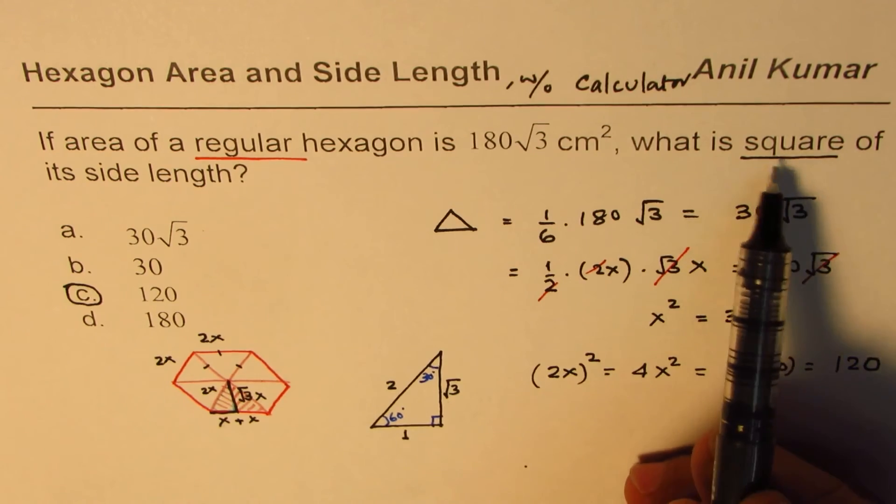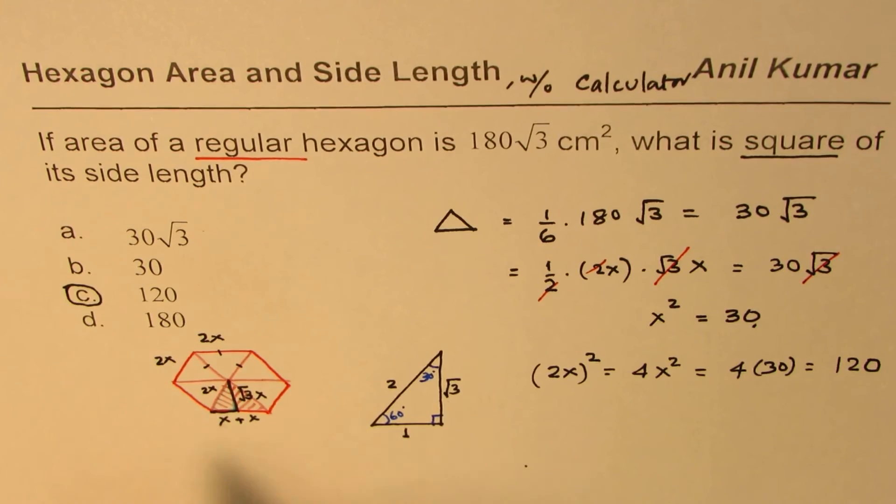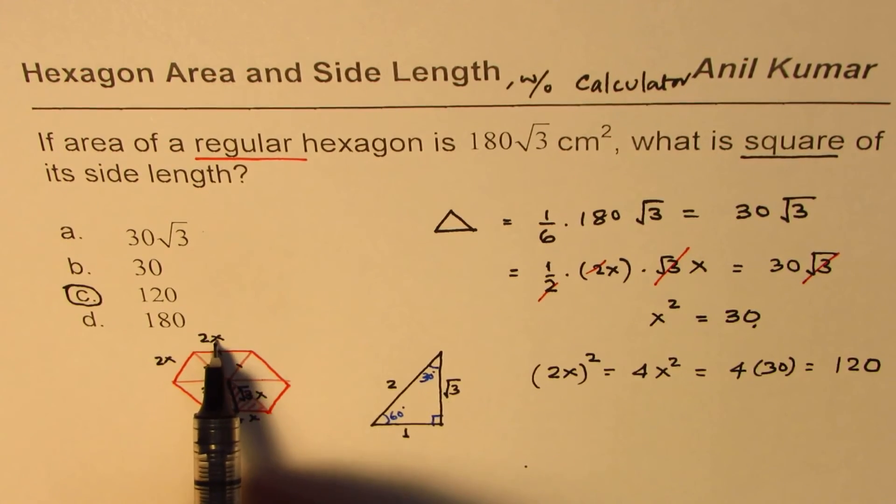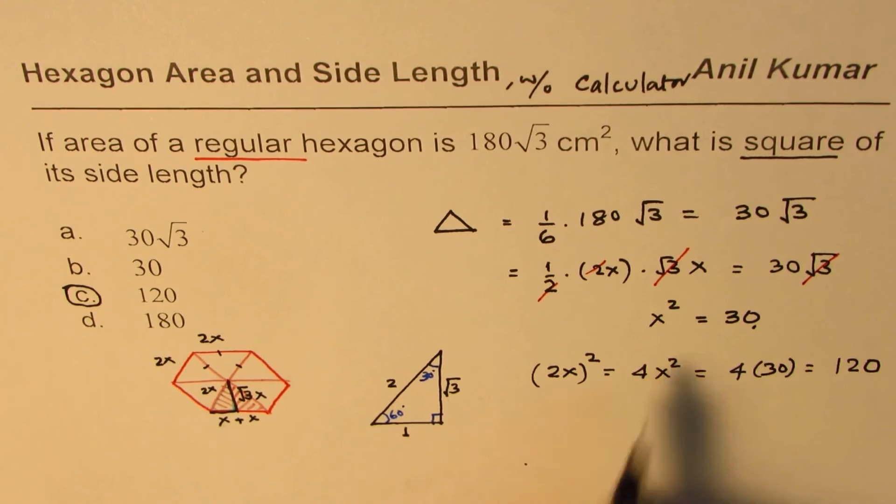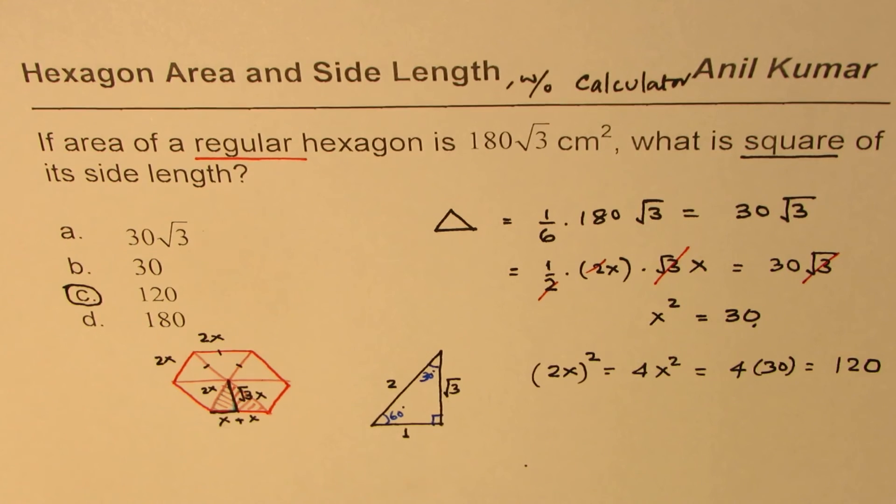We need square of the side length, right? So area of the side length square: 2x whole square is 4 times x squared. So multiply 30 by 4 to get your right answer, and that is how you should be doing it.